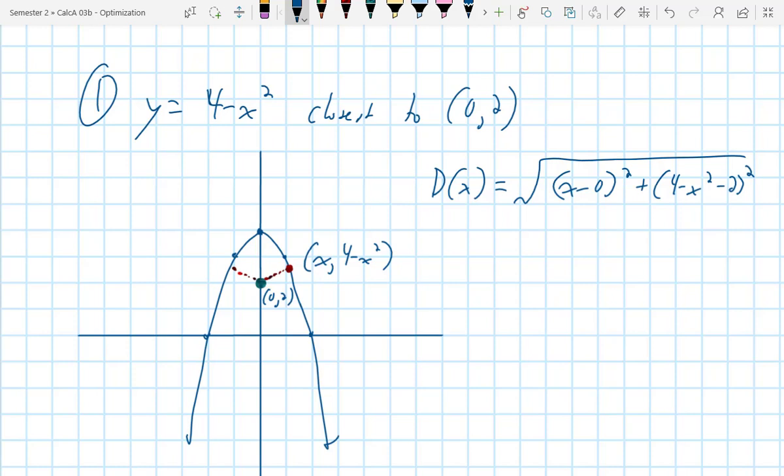This function reaches its smallest possible value when the thing underneath the radical reaches its smallest possible value, right? So instead of taking the first derivative of this function, I'm going to define a second function that I'm going to call r(x). And that's just for radicand. Radicand is the name for the thing underneath the radical.